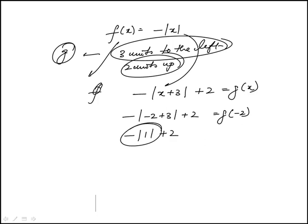And then absolute value of one is one, but I have a minus here, so it's minus one plus two, which is one. So g of minus two is one, which is answer choice D.